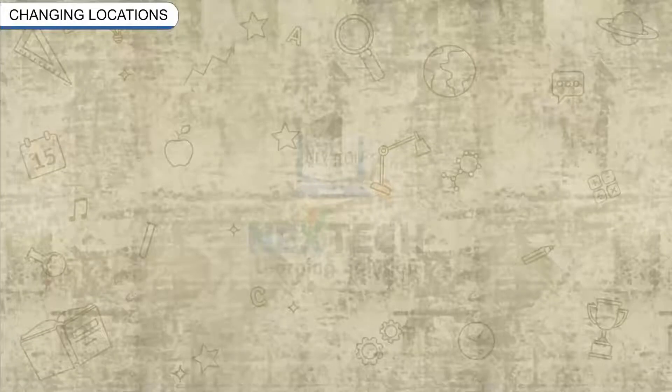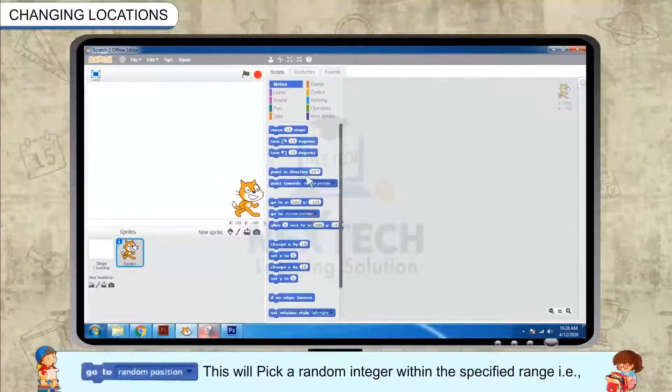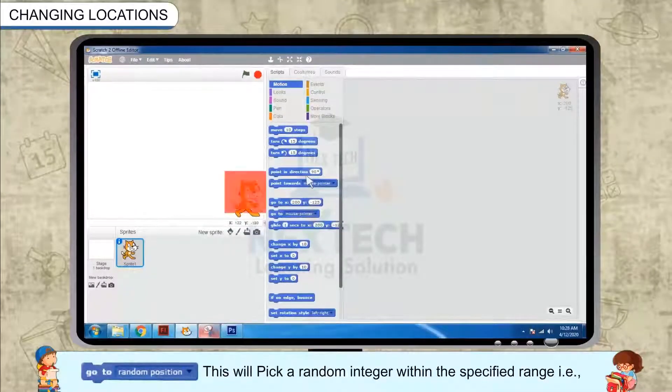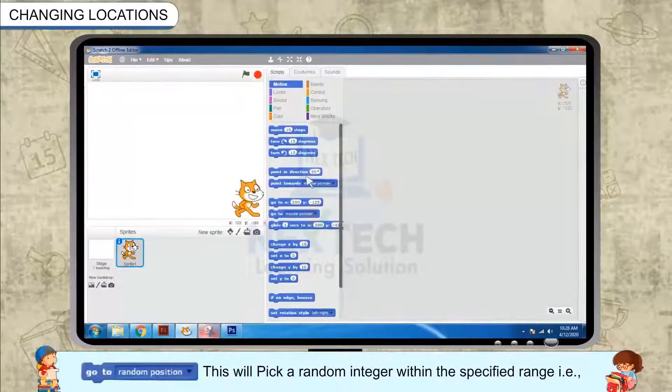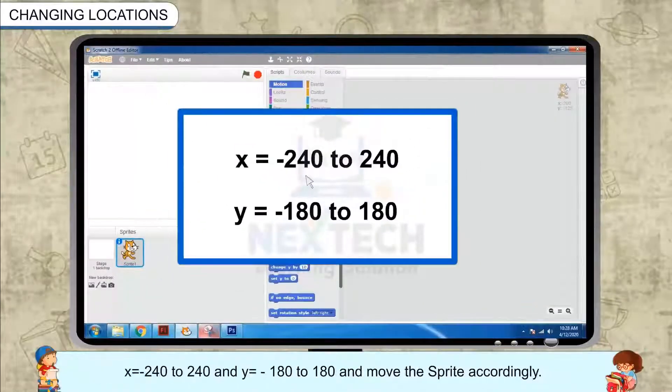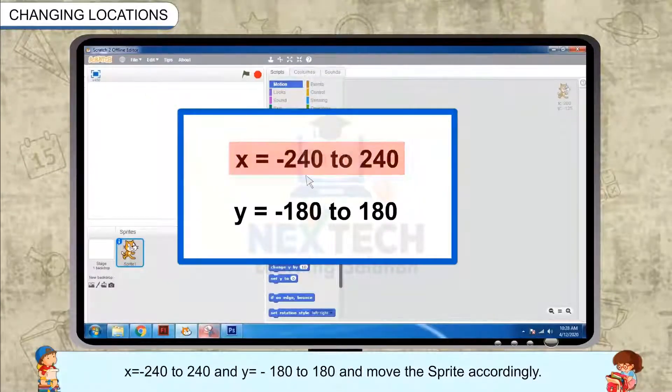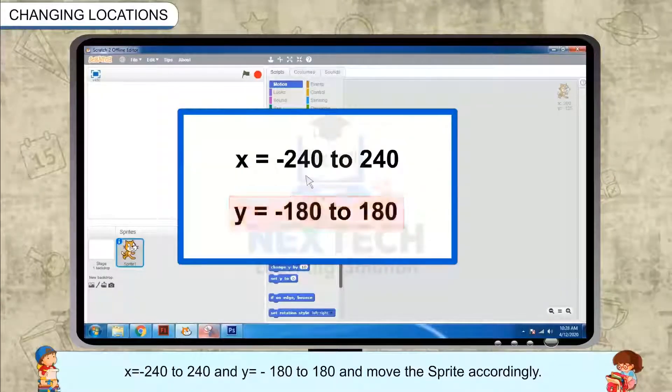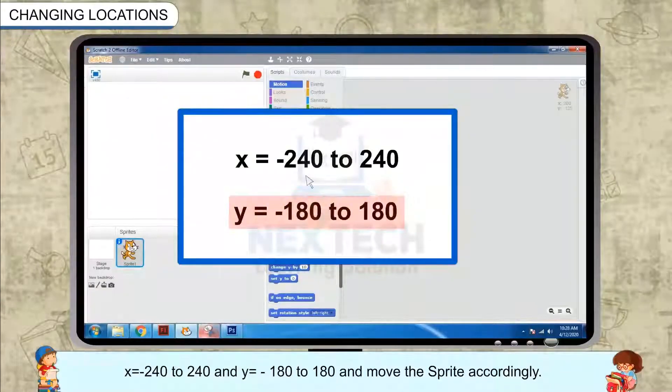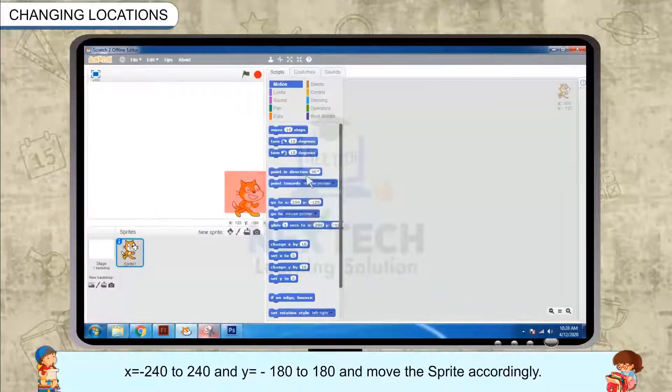Changing Locations Randomly. Go to Random Position. This will pick a random integer within the specified range, i.e. x equals to minus 240 to 240 and y equals to minus 180 to 180 and move the sprite accordingly.